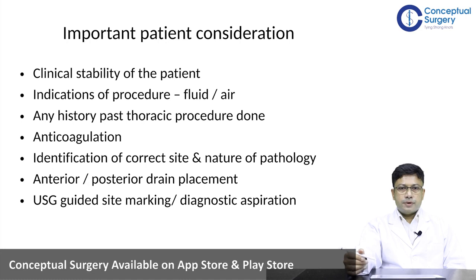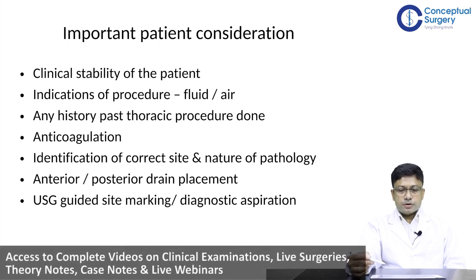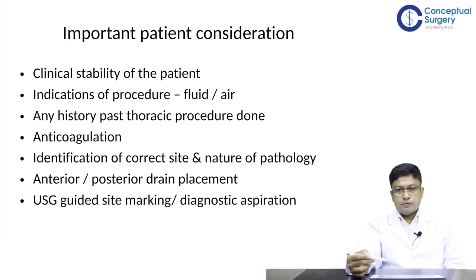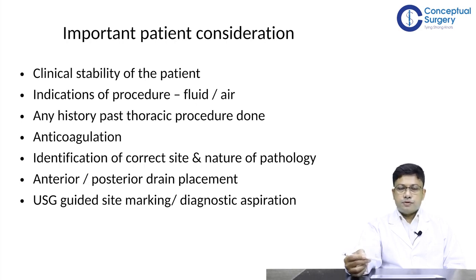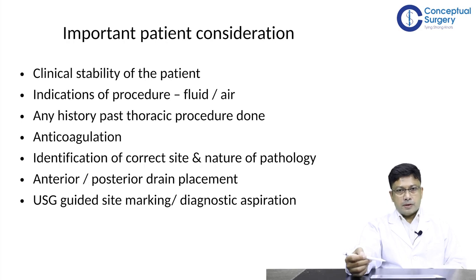One should also have a clear idea about the indication for chest tube insertion — whether it is meant for draining fluid or air. If meant for draining air, a thin-bore tube like 20 or 24 French is sufficient. But if meant for draining viscous fluids like blood or thick empyema, a wider bore tube like 28, 32, or 36 French is required.